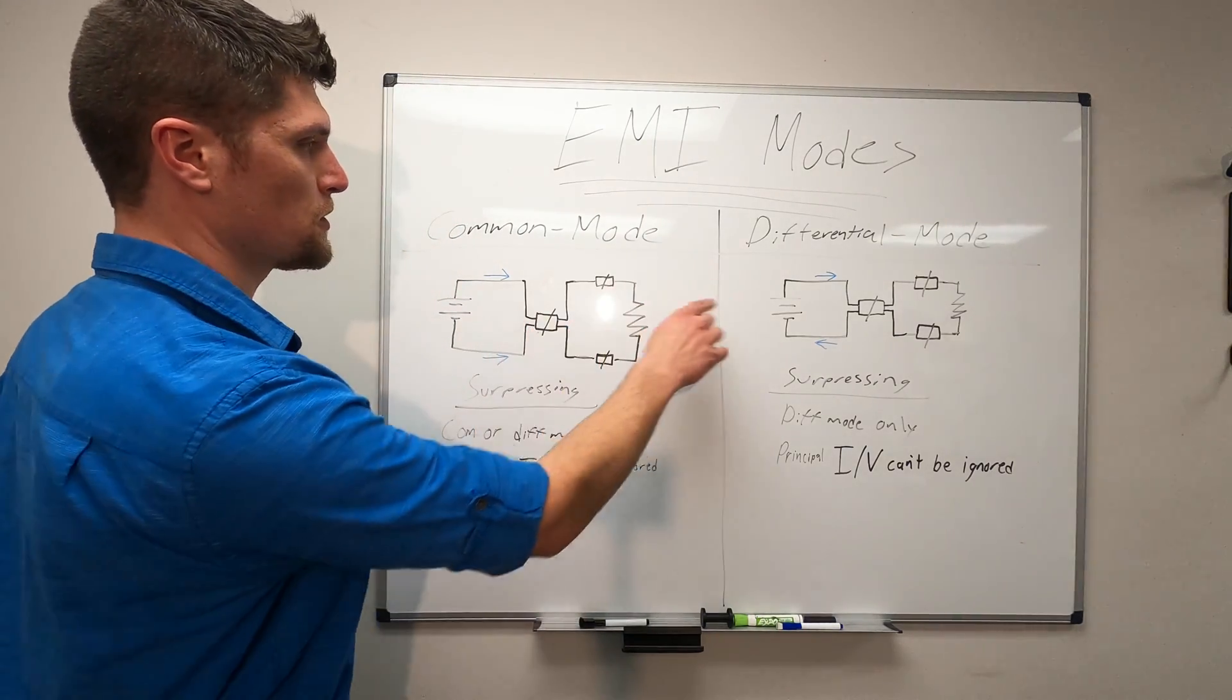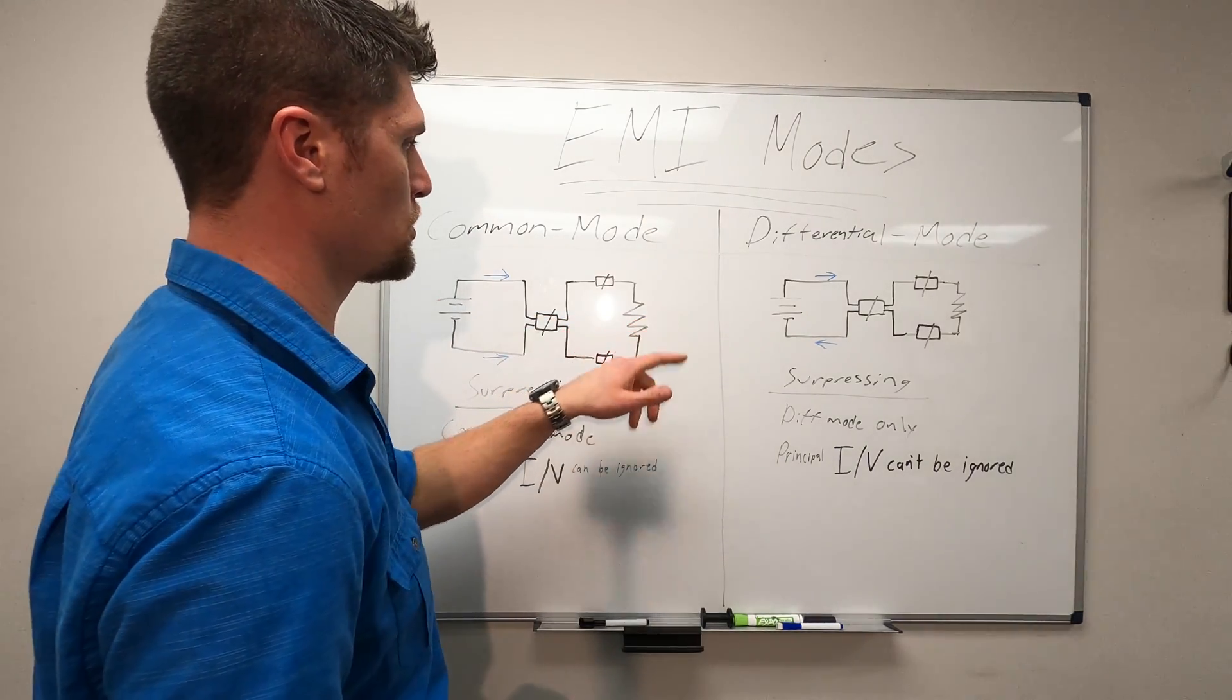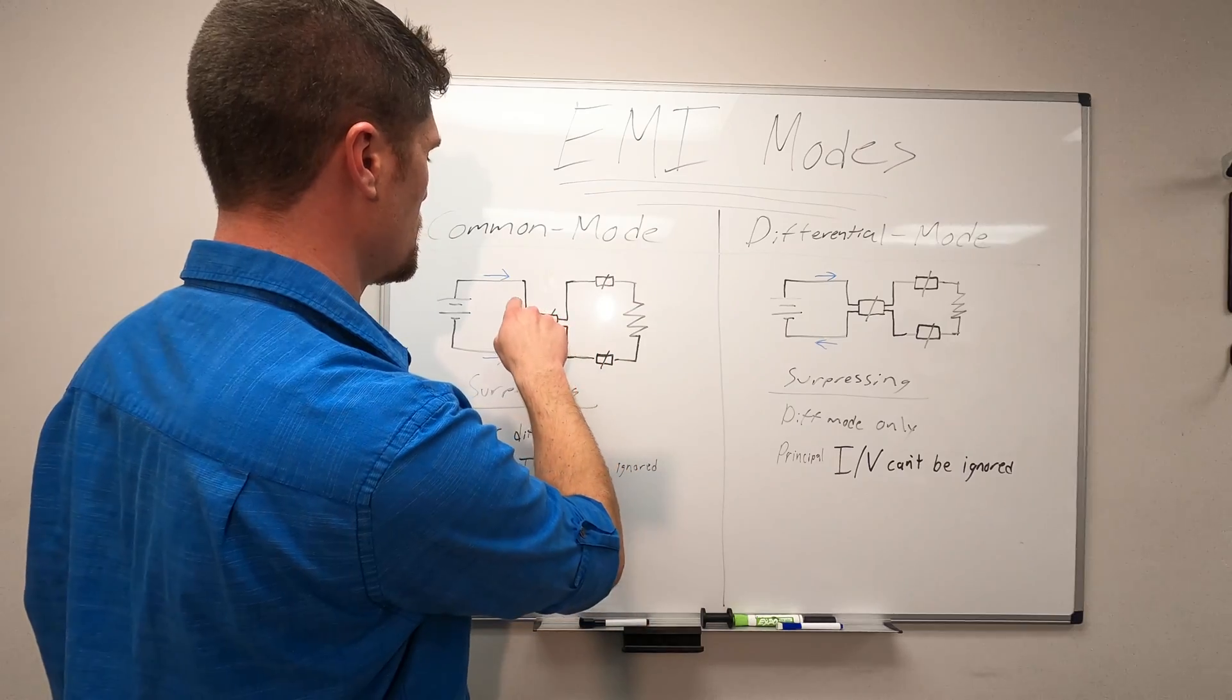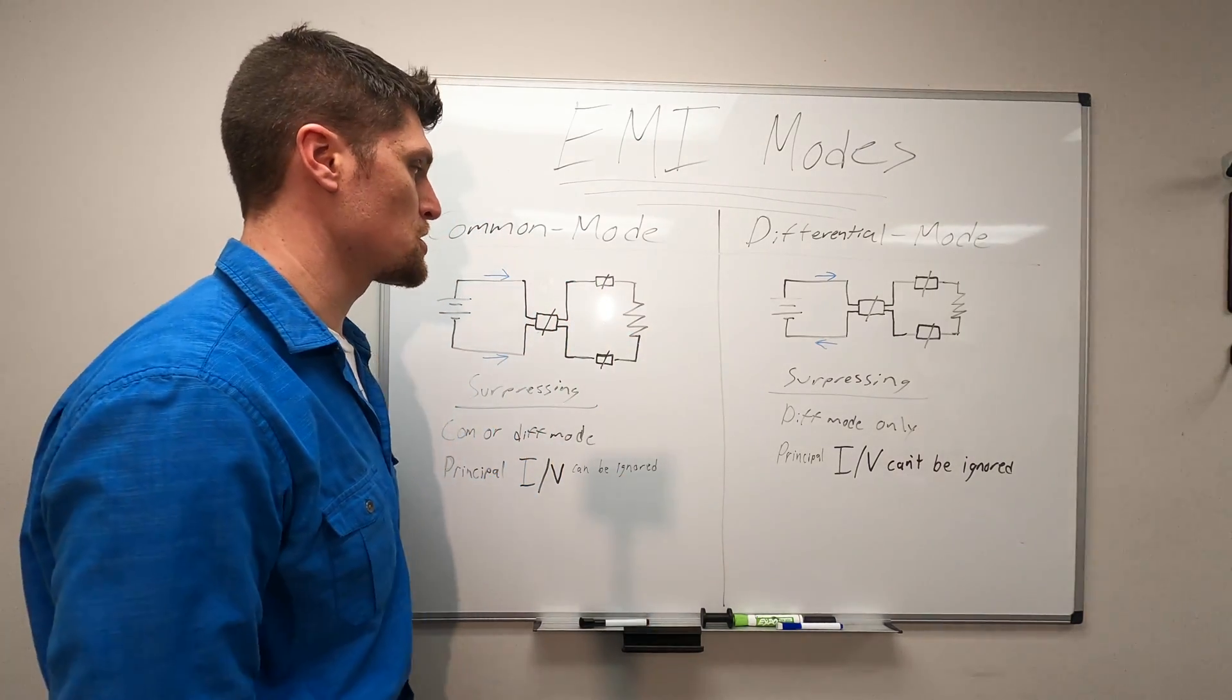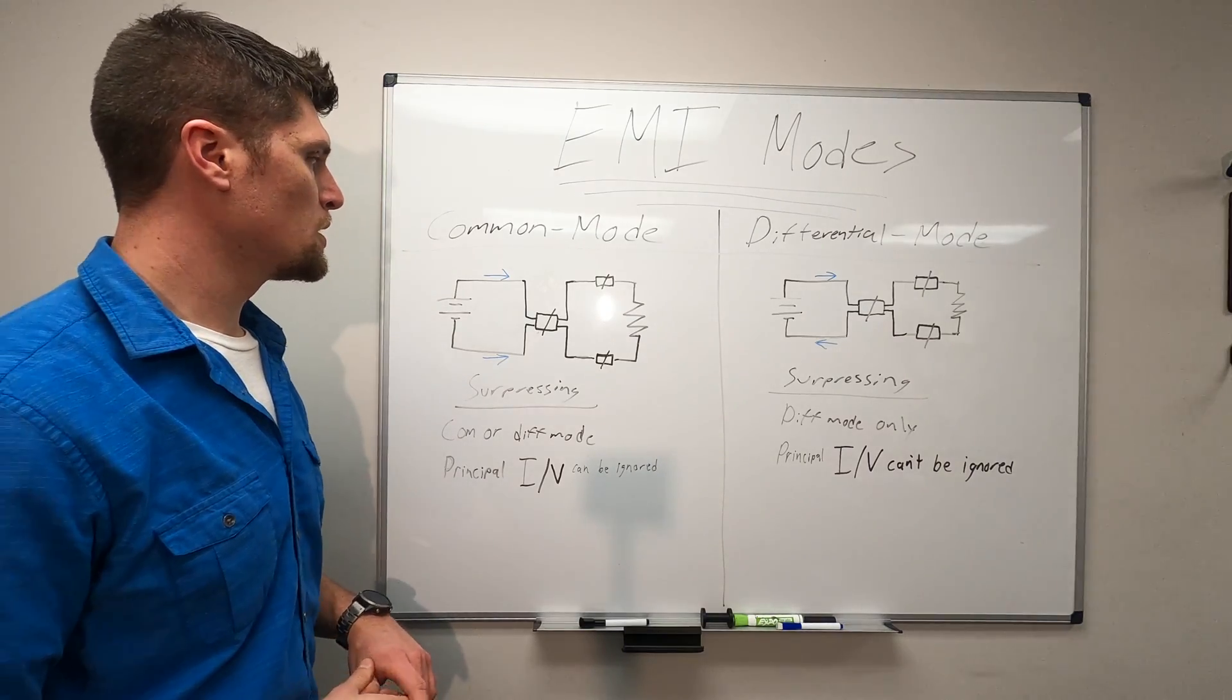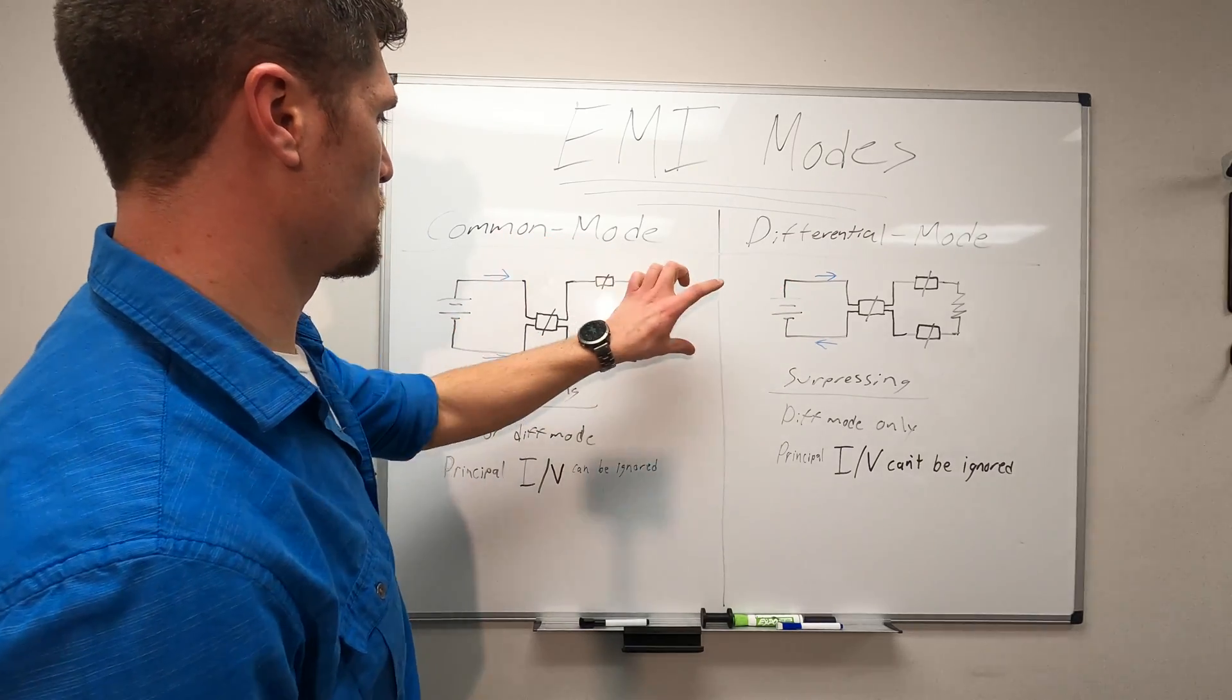And we have little basic circuit diagrams here with a source, our load on each one, along with three ferrite suppression devices embedded in the circuit.